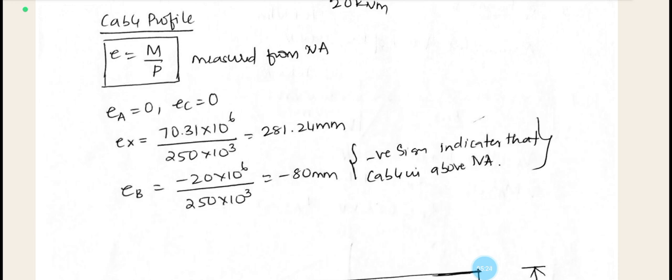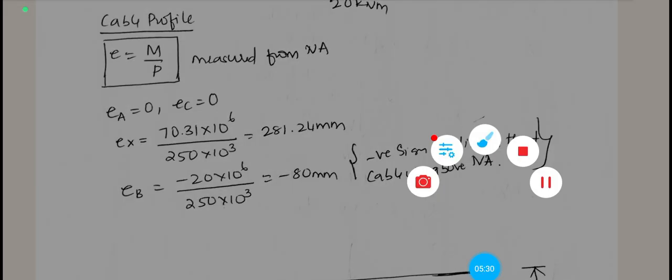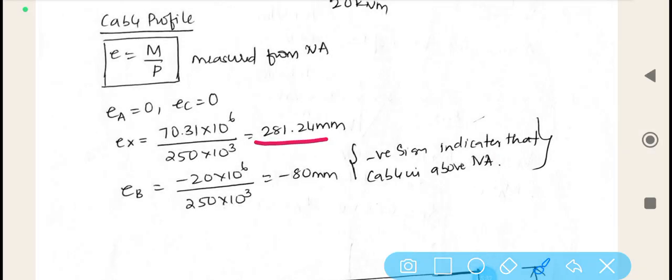Substitute what is the bending moment at point XX, that is MX, and we get the final value as 281.24, and at point B, here there is a change in the sign convention, and that is how here the negative sign indicates that the cable is above the neutral axis. The sign conventions can be made anything suitably. And finally, the eccentricity at point B is minus 80 mm.